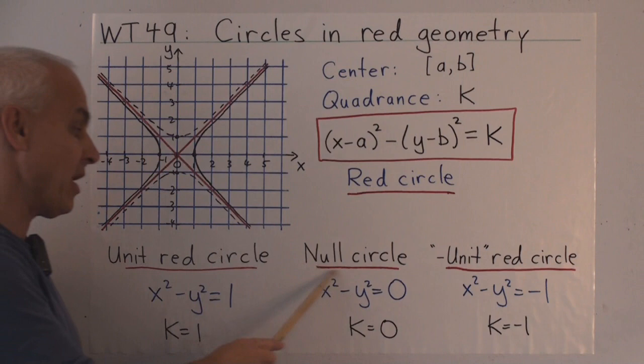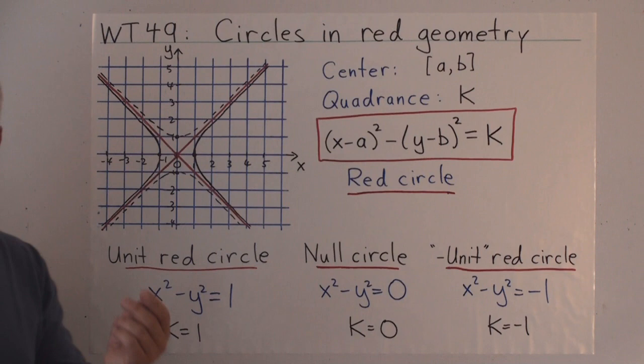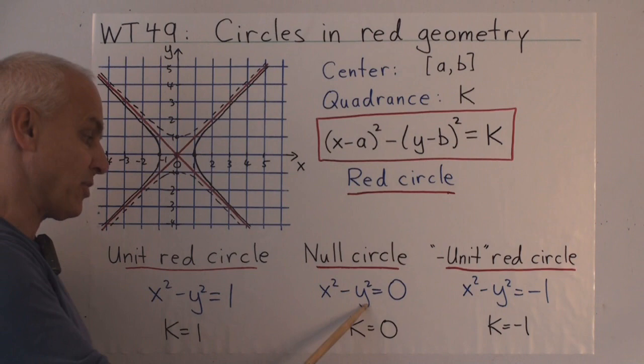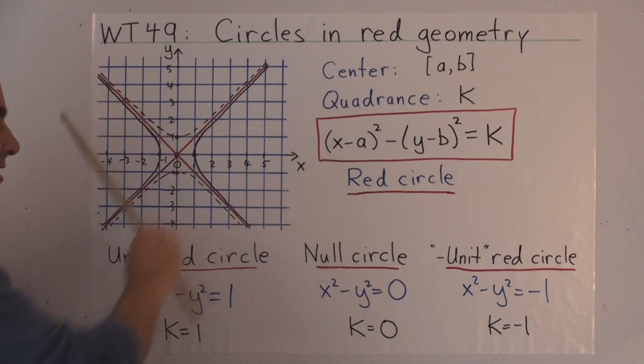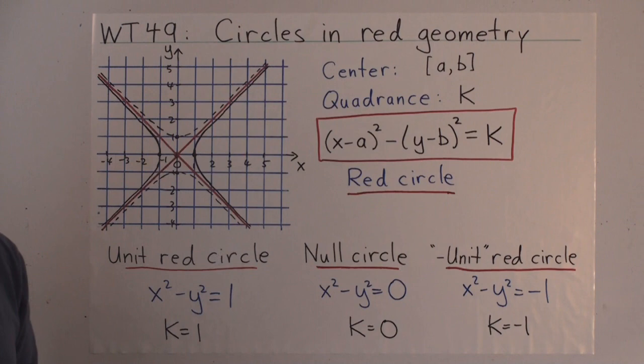These lines play an important role in the geometry, because they are, in fact, the null circle. The null circle has equation x² - y² = 0. And as opposed to the Euclidean case, where there's only a dot or a single point for such a circle, this thing factors as (x-y)(x+y). In other words, the equation of this line times the equation of this line. So the null circle is this red cross that's in the middle of our picture.